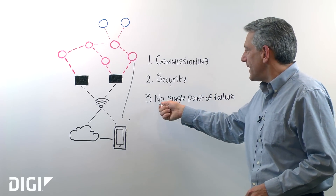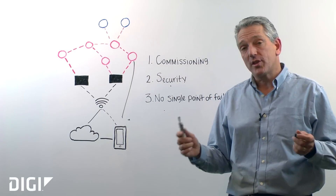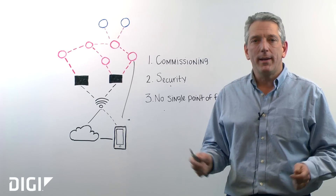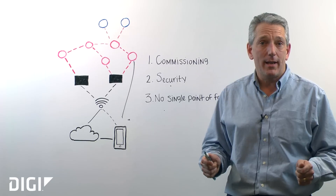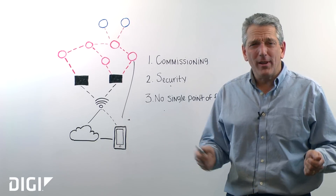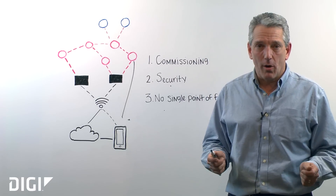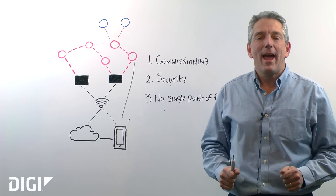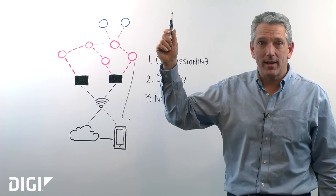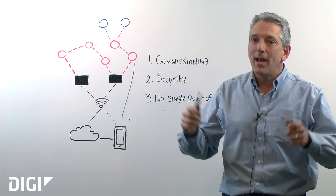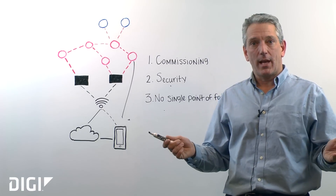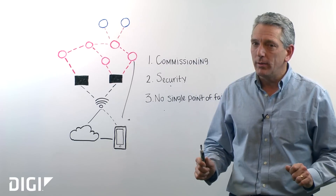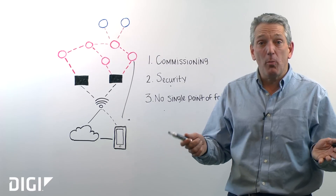The last key point is there is no single point of failure with a Thread network. Some other mesh networks, like Zigbee, require you to have a coordinator — one omniscient node that decides who gets to join and who doesn't, and is really responsible for the well-being of the network. Thread doesn't work that way. Thread nominates a leader: all the routers on a Thread network get together and nominate one. The leader gets to grant privileges on who joins and who doesn't. If that leader goes away or gets unplugged, the routers get together again and nominate a new leader very quickly — so there's no single point of failure.